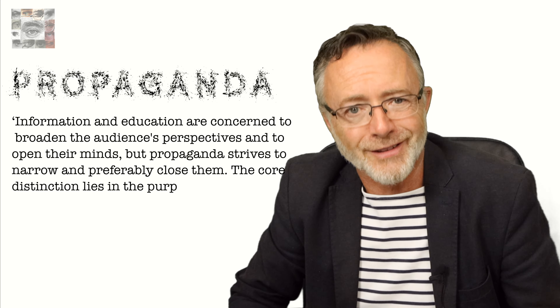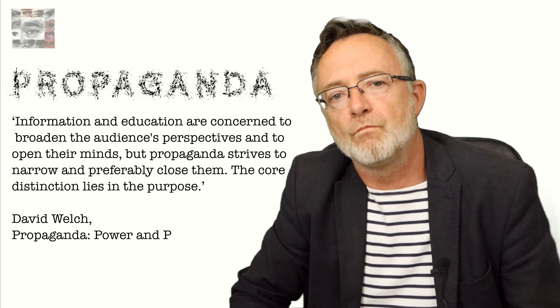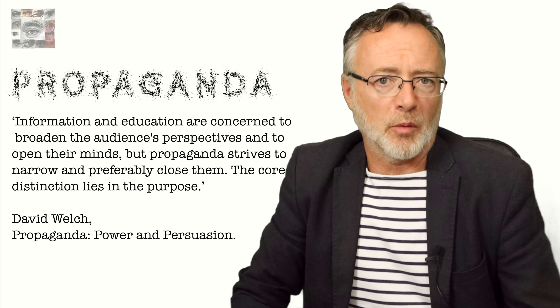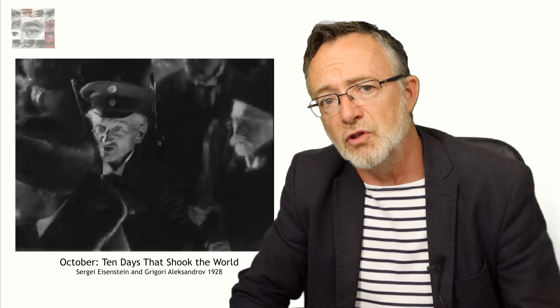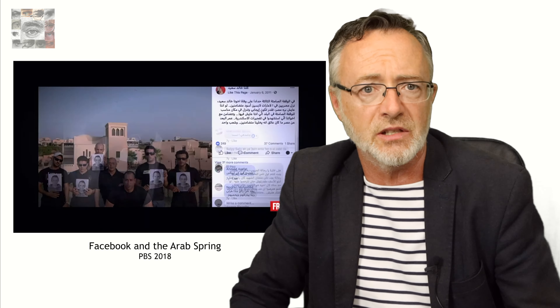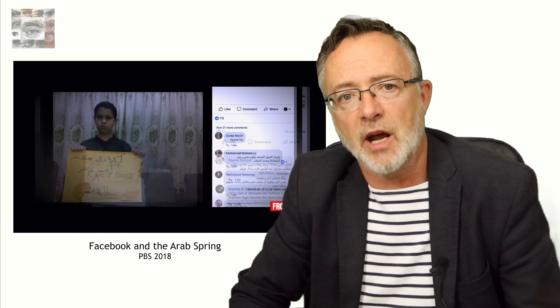The core distinction lies in the purpose. The methods used to carry the propaganda message are generally limited by the technology available. As Marshall McLuhan wrote in the 1960s, the medium is the message. Propaganda posters were very important in the semi-literate societies at the start of the 20th century, but in the 1920s cinema became the new visual medium. Television took over the role of radio by the 1960s, and the inability of authoritarian regimes to control the internet and social media led to the collapse of North African dictatorships in the Arab Spring of 2011.